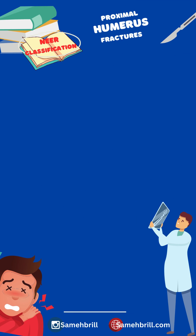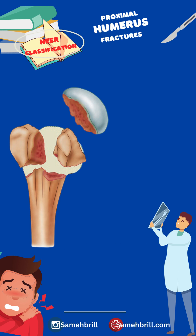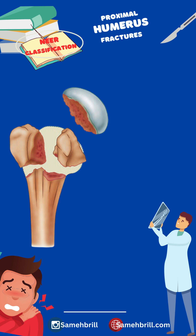The Neer classification system is the most commonly used system today. The Neer four-segment classification system is built upon the idea of four possible fractures, as described by Codman.